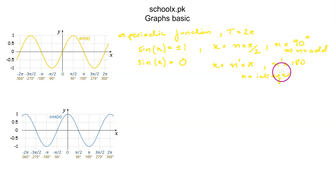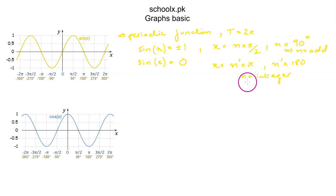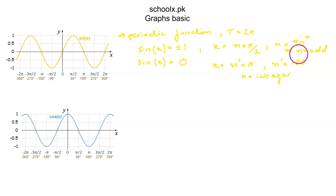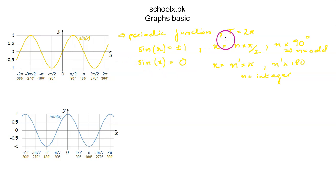Here n is any integer because whole numbers are always positive but integers can be negative. So n can be negative 2, negative 3, negative 4, 0, 1, 2, 3. And for the max/min values, n is 1, 3, 5 or negative 1, negative 3, negative 5. Sine is a periodic function and the period of sine is 2π.